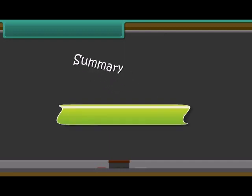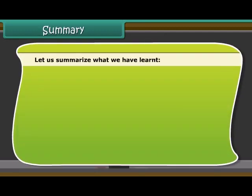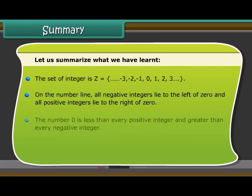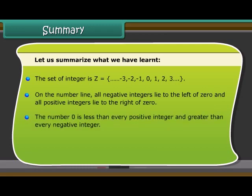Summary. Let us summarize what we have learned. The set of integer is Z, which equals minus 3, minus 2, minus 1, 0, 1, 2, 3. On the number line, all negative integers lie to the left of 0 and all positive integers lie to the right of 0. The number 0 is less than every positive integer and greater than every negative integer.